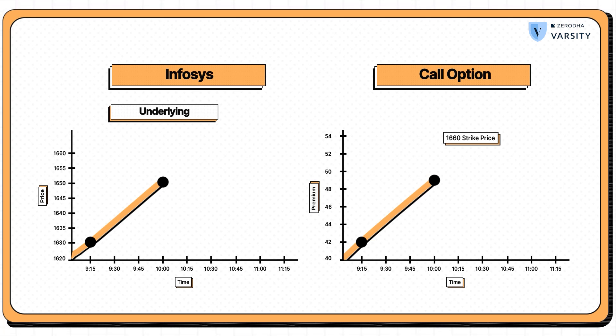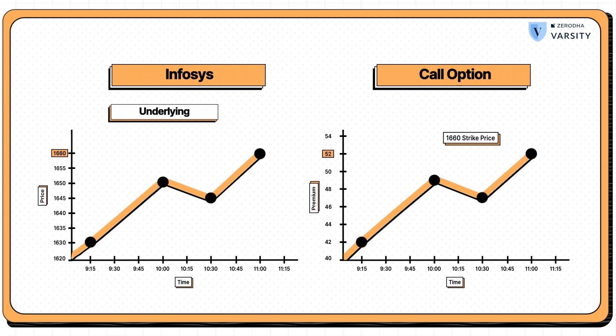30 minutes later, at 10:30, Infosys had a slight dip at 1645. The premium too dropped by 2 rupees, that is at 47. Finally, at 11 a.m., Infosys is currently trading at 1660. The 1660 option, if you recognize, is at the money and the premium associated with that is 52 rupees.